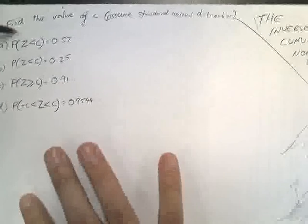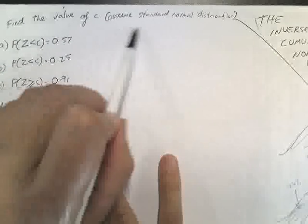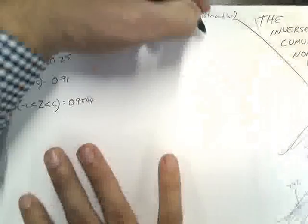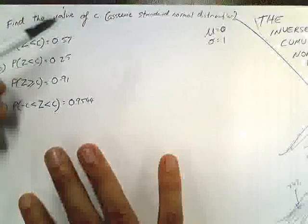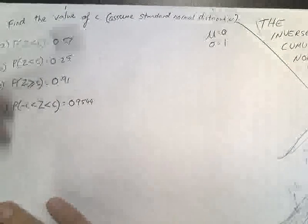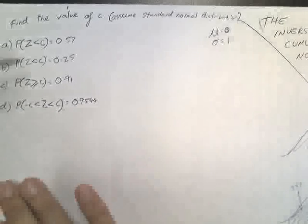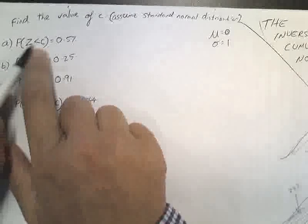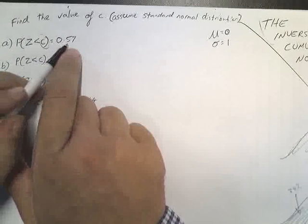Okay, so find the value of C. And for this particular question, we're going to assume it's a standard normal distribution. So, don't forget, a standard normal distribution has a mean equal to 0 and a standard deviation equal to 1. There's no reason in particular we're using the standard normal distribution, but it's just convenient because then we won't have to keep typing in different numbers. So, let's look at this first question here. The probability that Z is less than C, and that's the thing we're trying to find the value of C, is equal to 0.57.